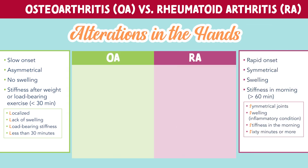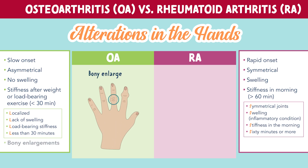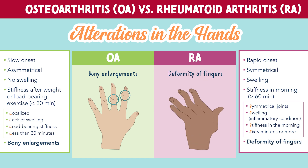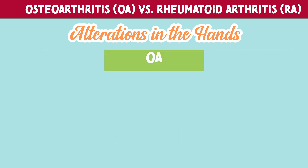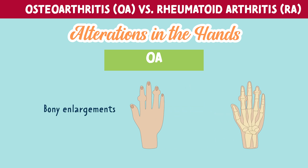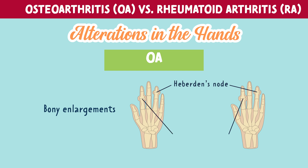Let's talk about the alterations in the hands. OA is known for bony enlargements, meaning small joints just appear larger. But RA is known for deformity of the fingers, where the joints actually become deformed and may appear curved. It's important to know that OA has two types of alterations in the hands called nodes. The distal bony enlargements, towards the tip of the fingers, are called Heberden's nodes. While the proximal enlargements, meaning closer to the palms, are called Bouchard's nodes.